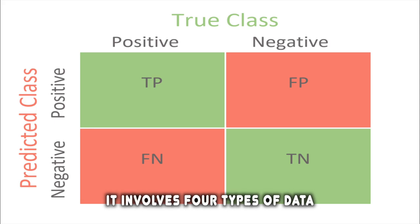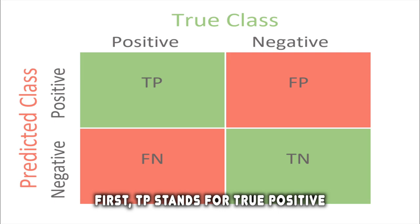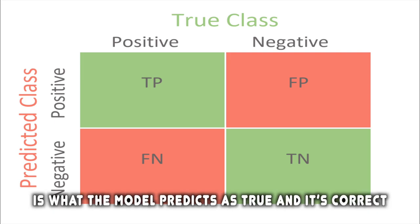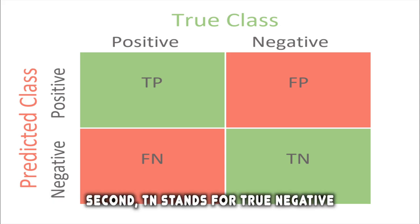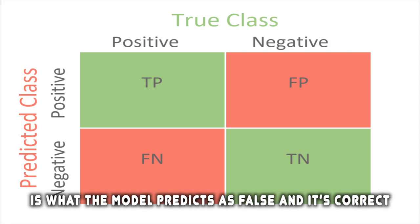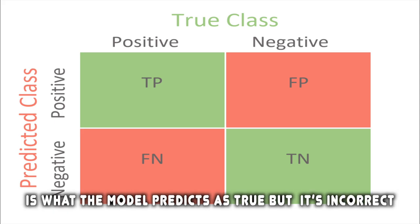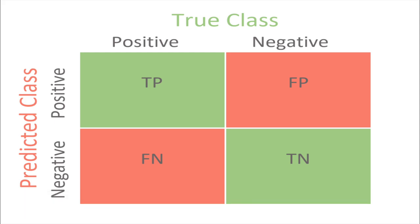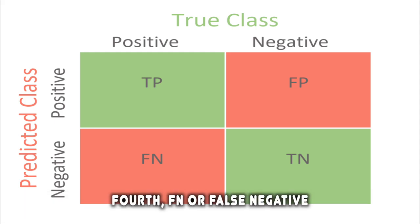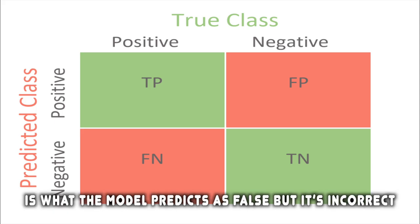First, TP stands for true positive — it's what the model predicts as true and it's correct. Second, TN stands for true negative — it's what the model predicts as false and it's correct. Third, FP or false positive — it's what the model predicts as true but it's incorrect. Fourth, FN or false negative — it's what the model predicts as false but it's incorrect.